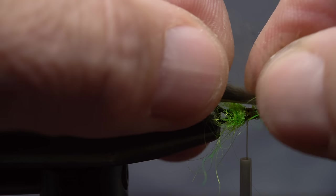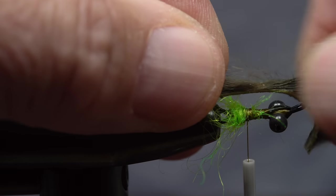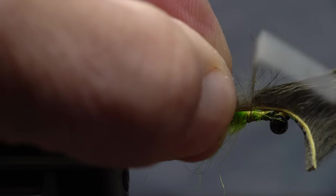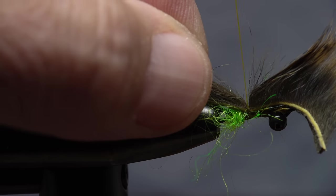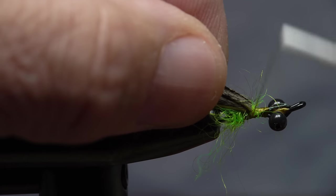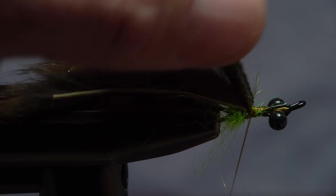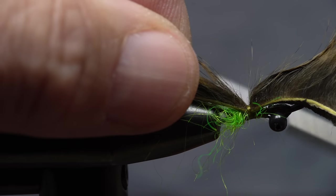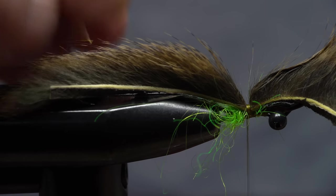Wet your fingers to separate the fur right in front of the hot spot and take a couple wraps of tying thread to anchor the strip to the shank. Pull the remainder of the pine squirrel back and take two wraps around just the shank, followed by two more over top of the strip. This will help stop it from wanting to rotate around the shank.